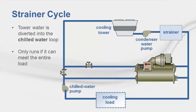Typically, the tower water passes through a filter or strainer before entering the chilled water loop, hence the name. The strainer cycle cannot run simultaneously with the chiller, so if the tower cannot meet the entire cooling load, the strainer cycle does not operate. This is not used much, but sometimes an existing system must be modeled for comparison purposes.